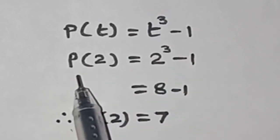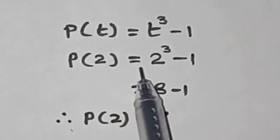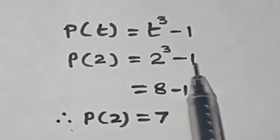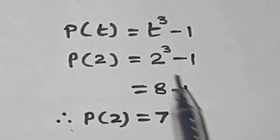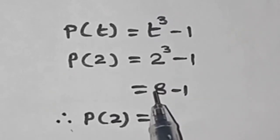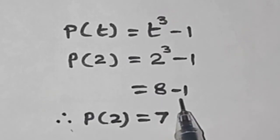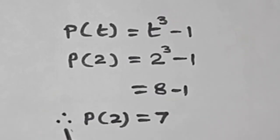P of t is given t cube minus 1. Find the value of P of 2. P of 2 is equal to: at t is equal to 2, 2 cube minus 1. 2 cube is equal to 3 times — 2 twos are 4, 4 twos are 8. 8 minus 1 is 7. Therefore, P of 2 is equal to 7.